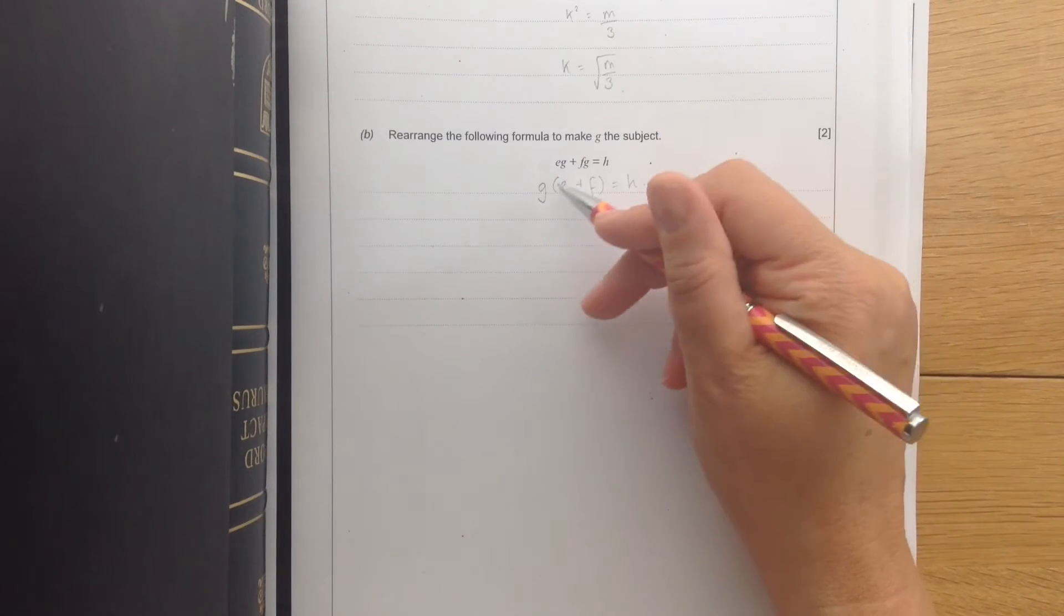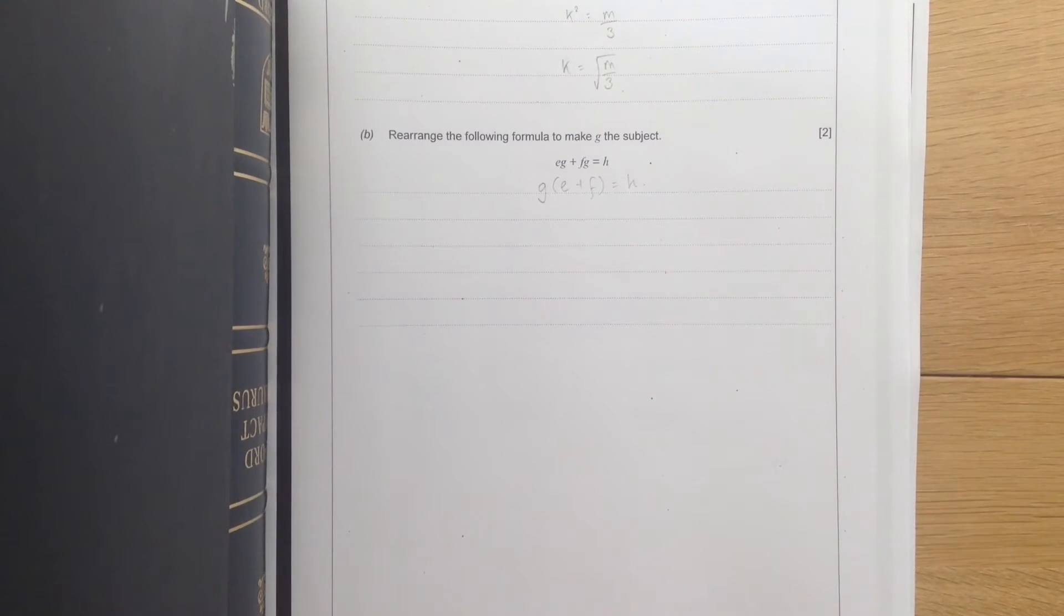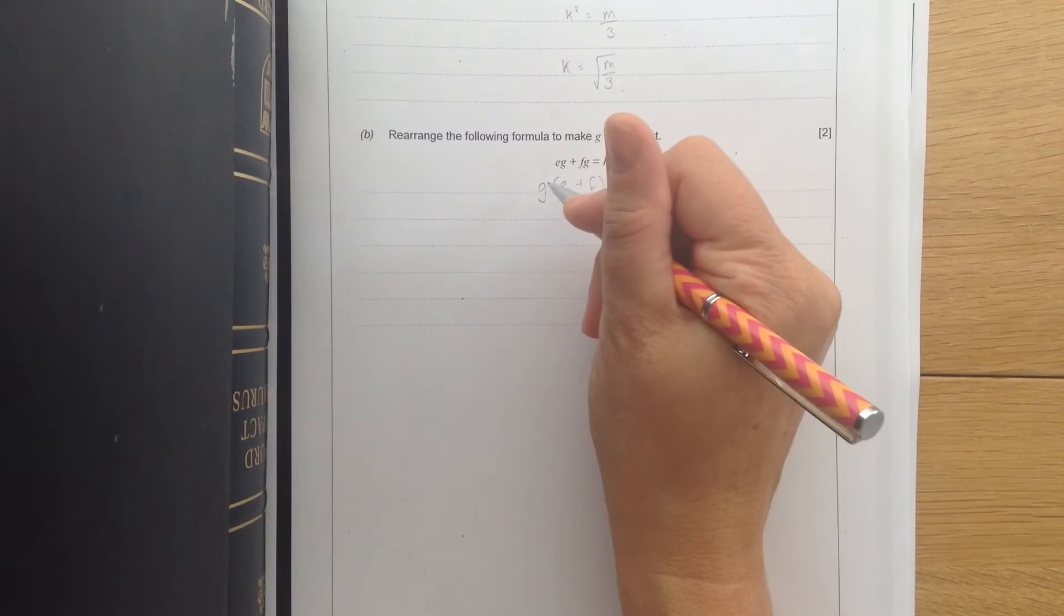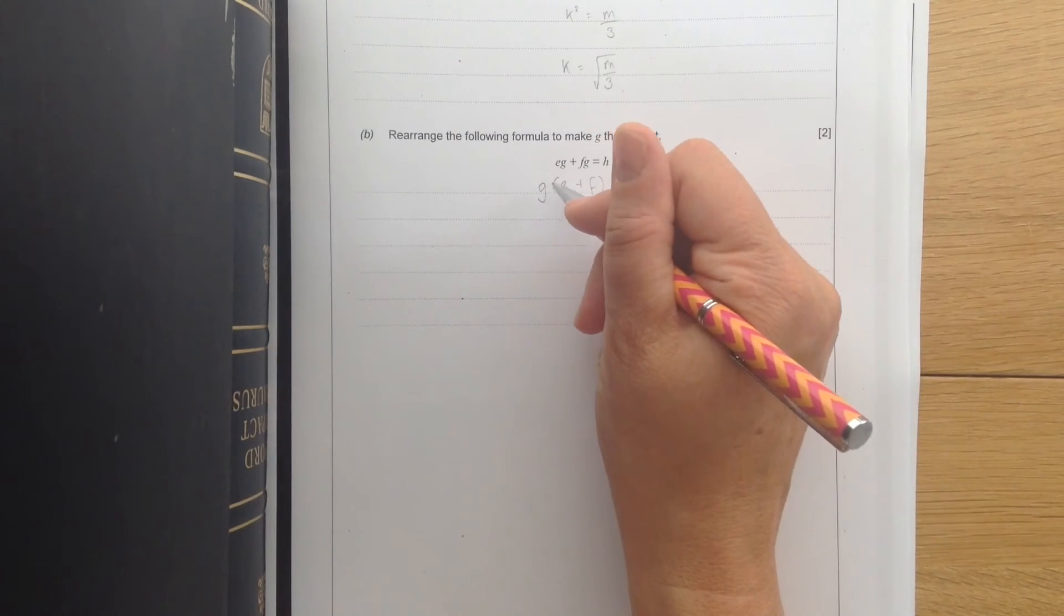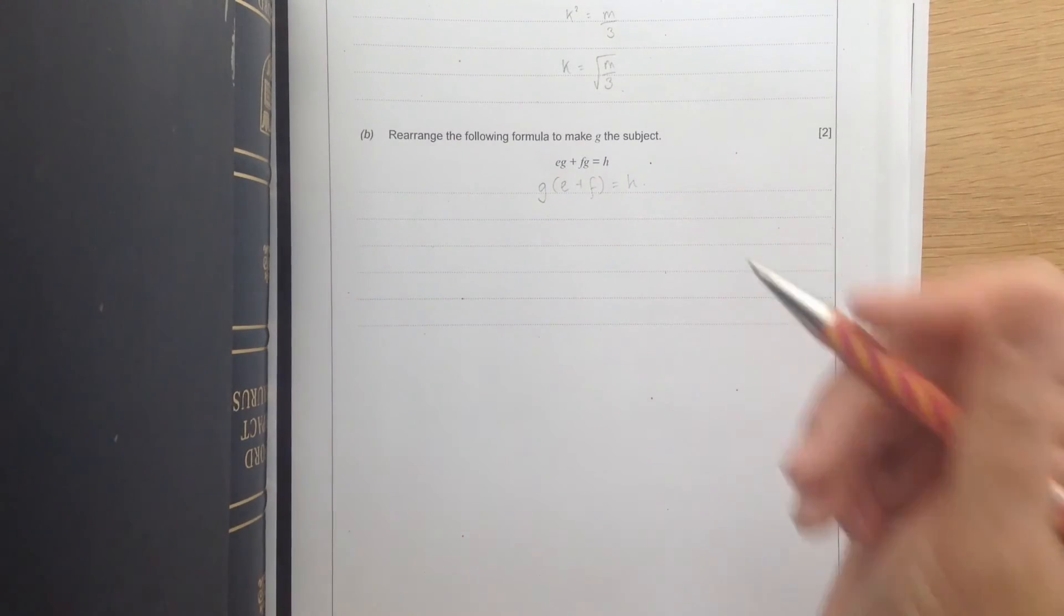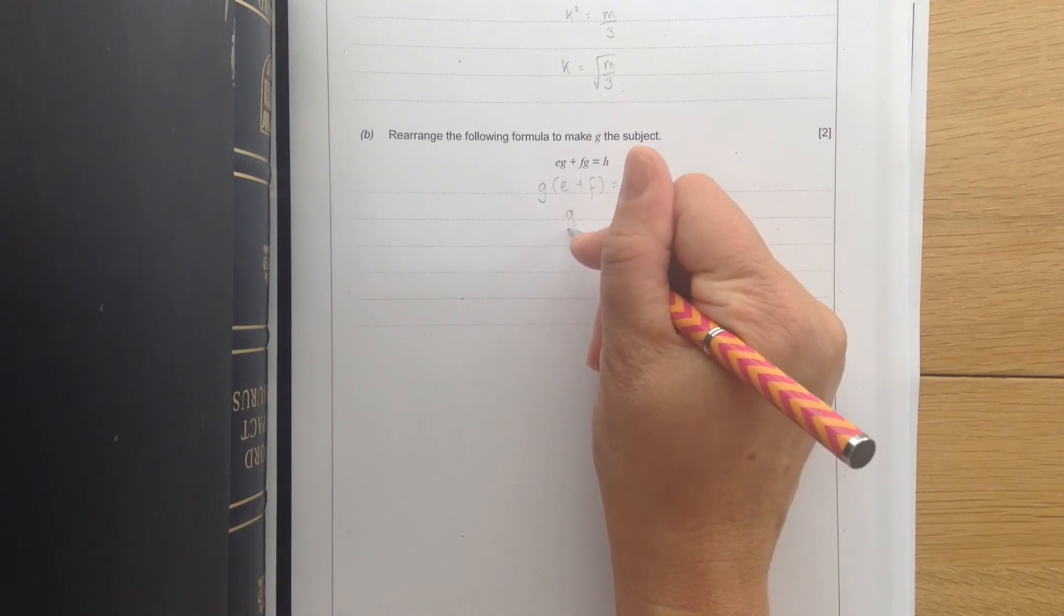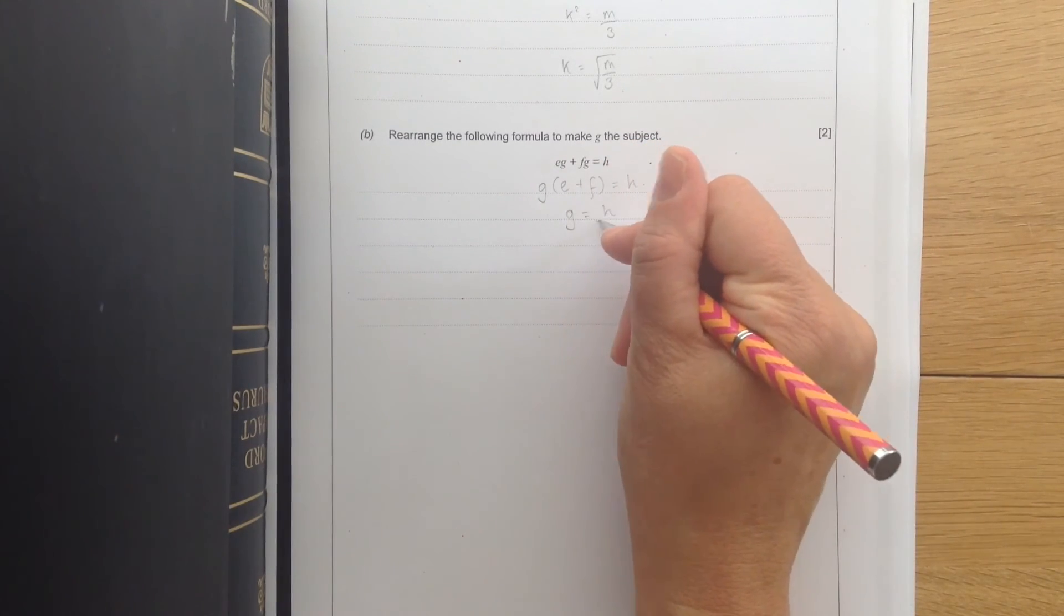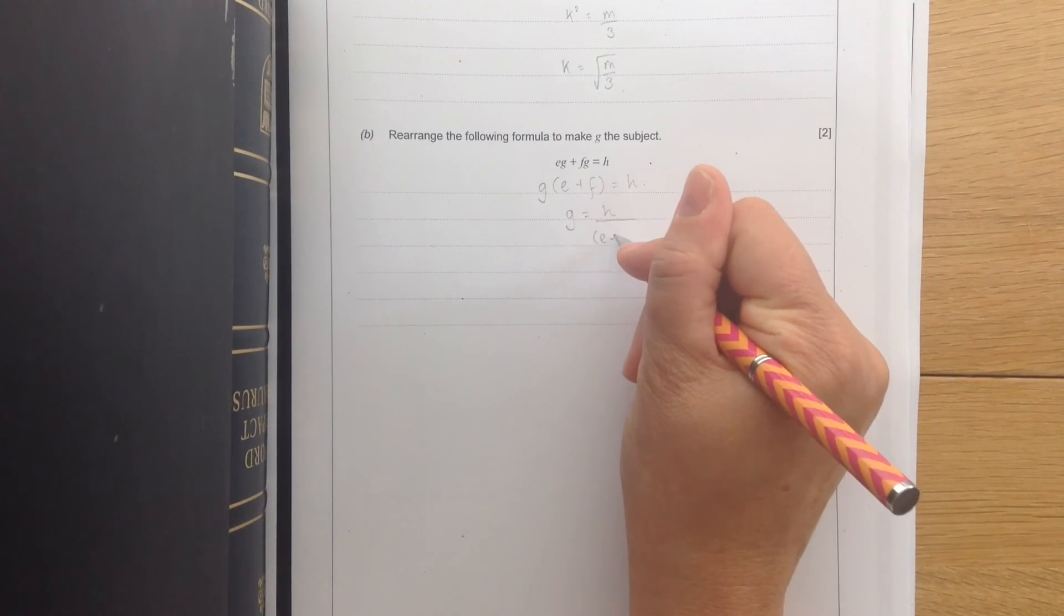I can move this as a whole. And that's what I mean by wrapping it. Once you've put brackets around it, it acts as a whole thing. It's like wrapping it up in paper. So in between the g and the bracket then is a times sign. So to get rid of e plus f we need to divide by it. So g equals h divided by e plus f.